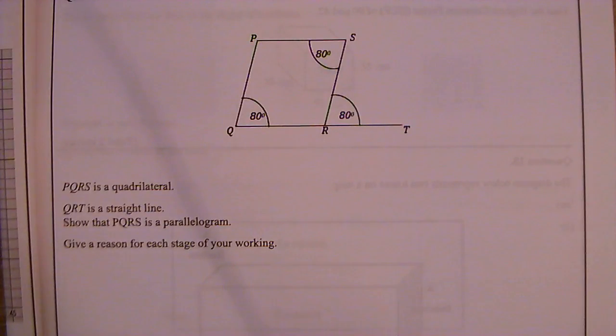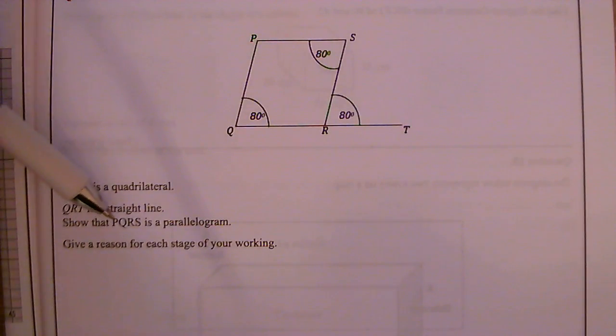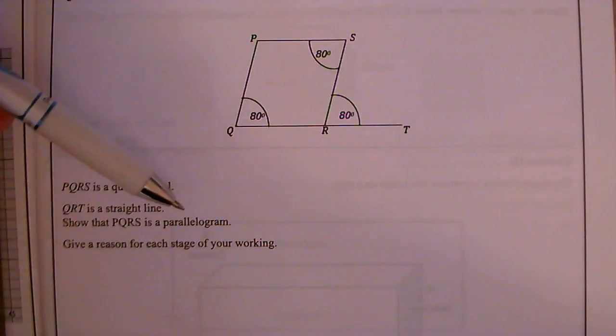Question 13. PQRS is a quadrilateral—quad meaning four-sided shape. QRT is a straight line. So QRT there is a straight line. Show that PQRS is a parallelogram. Give reasons for each stage of your working.